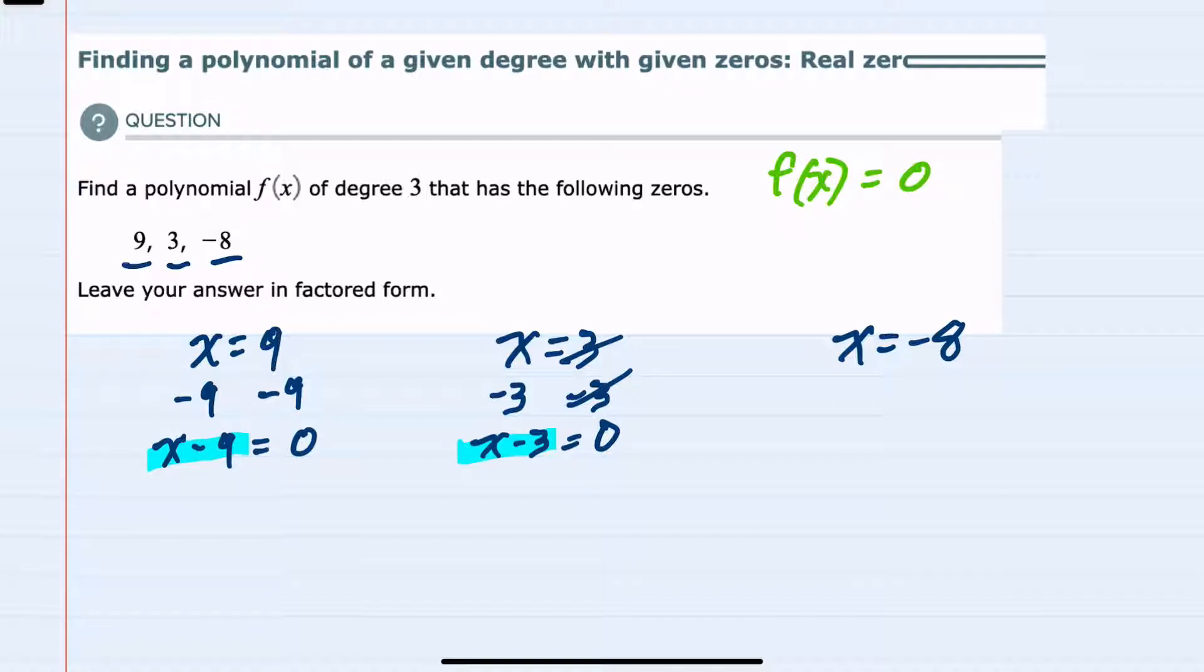And then for the last one setting this equal to 0 I would here add 8 to both sides. I get x plus 8 on the left, 0 on the right. So I now have a third factor of x plus 8.